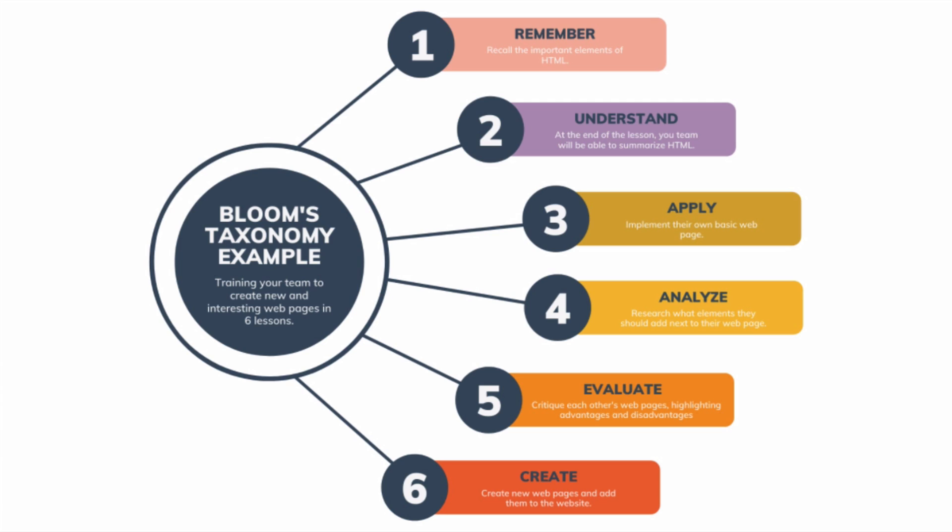Next, you consider where your team is right now. Your team is utterly clueless about websites and HTML, so you decide to start teaching from the bottom of the taxonomy. Using this start and end point, you structure your training into six lessons, each targeting a different level. Lesson one, at the remember level: you explain essential HTML elements, and at the end of the lesson your team will be able to recall the important elements of HTML. Lesson two, at the understand level: your team will be able to summarise the purpose of HTML in some of your website's actual pages. Lesson three, at the apply level: each team member will be able to implement their own basic web page for the first time, solving problems as they arise.